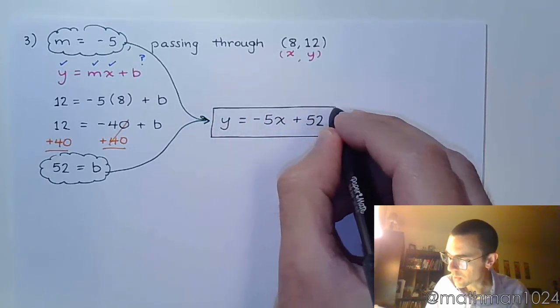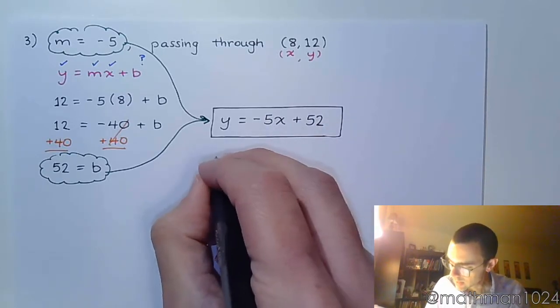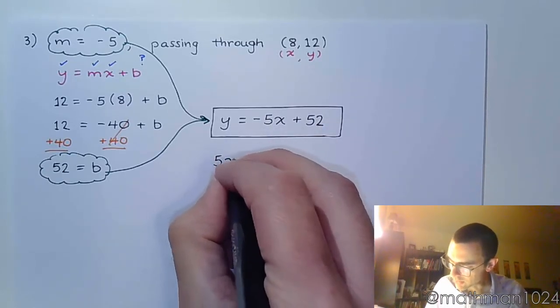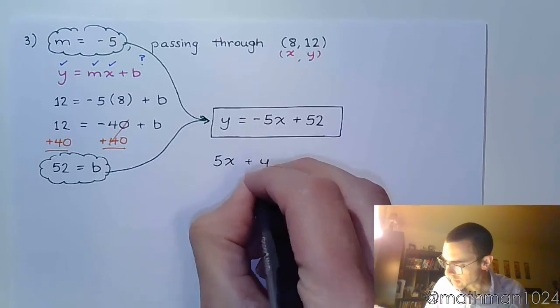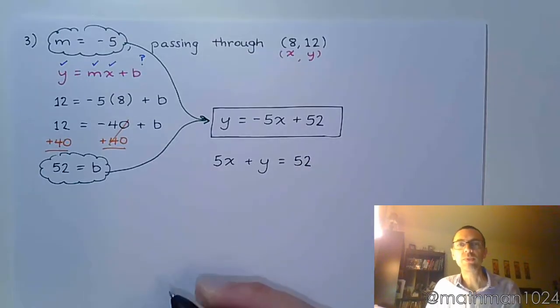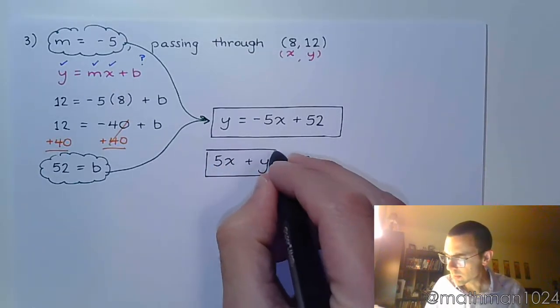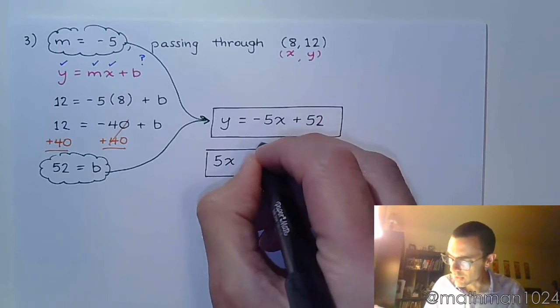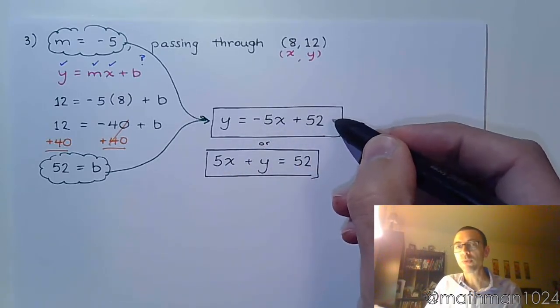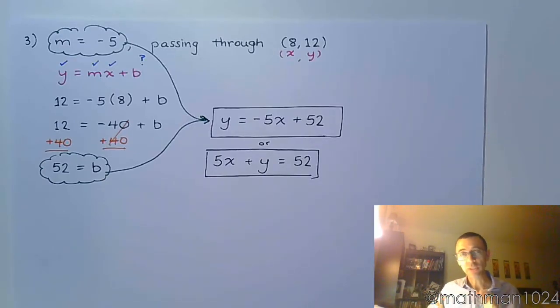Now, you can also put this equation in standard form simply by moving the 5x to the other side. So that would give you a positive 5x plus y is equal to 52. So it really doesn't matter which way you want to write your answer as long as it is in one of these forms, either the slope-intercept form or the standard form. Alright, let's do it again.